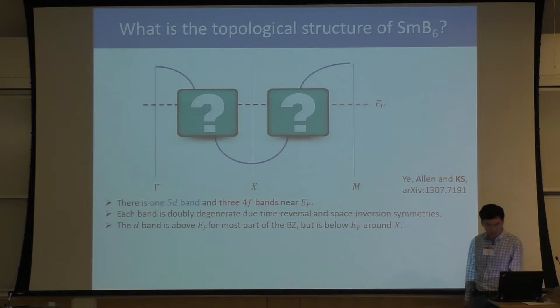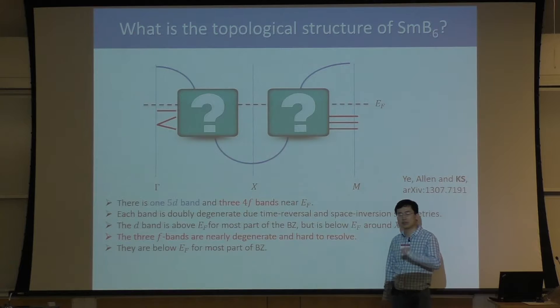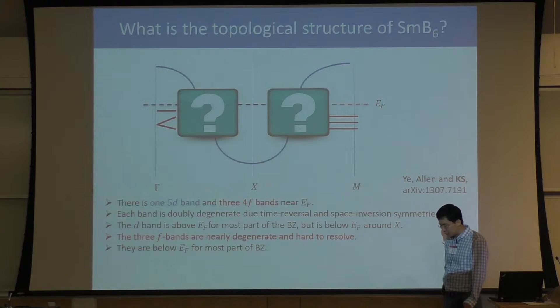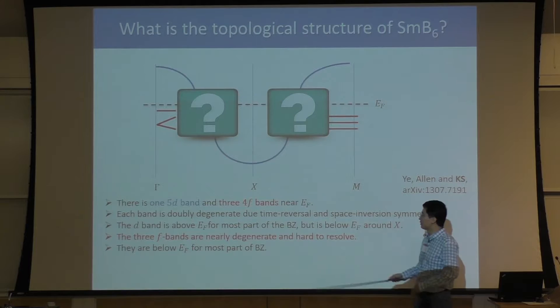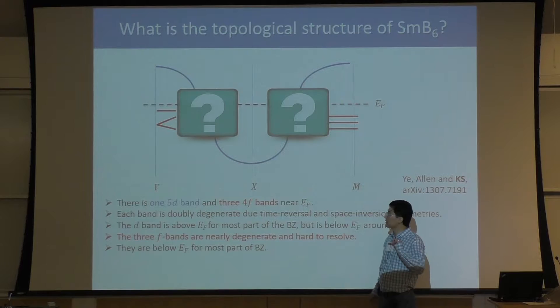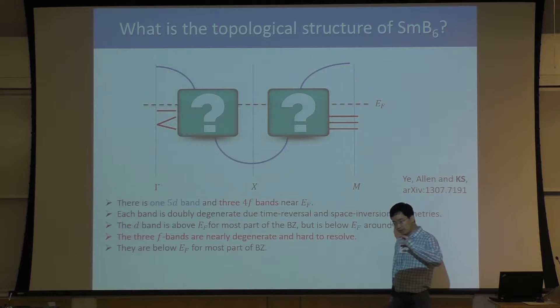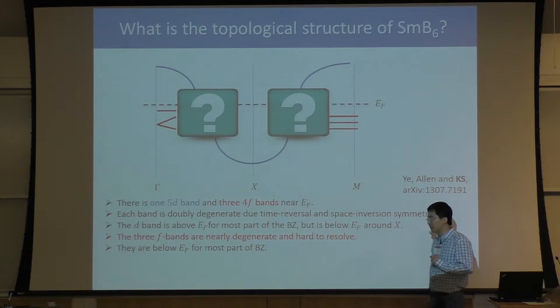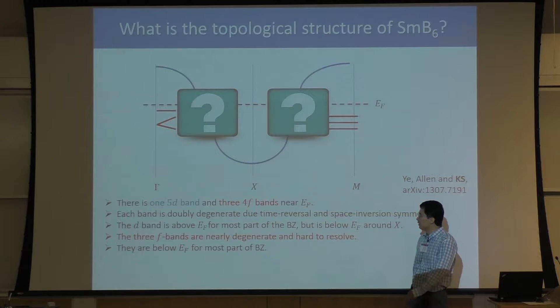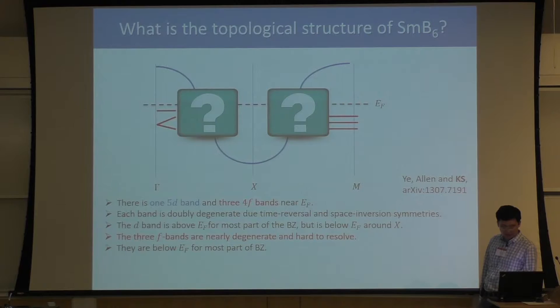In addition to the D band, there are also three F bands coming from the F electron — the localized electrons. These three F bands are problematic because F electrons have very strong electron-electron interaction, making band structure calculation very hard. On top of that, these three F bands are almost flat, with tiny bandwidth, and almost degenerate — they almost have exactly the same energy. So experiments don't have the resolution to resolve these three bands, and numerical calculations don't have enough accuracy to show the detailed band structure.